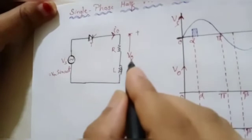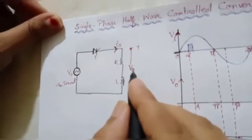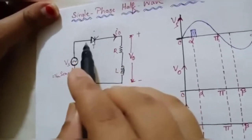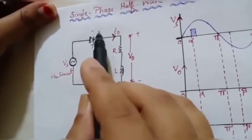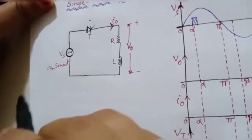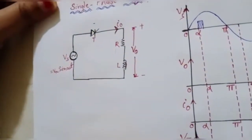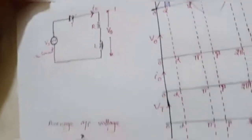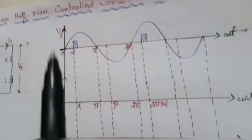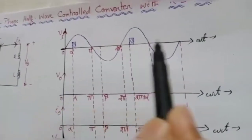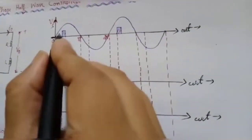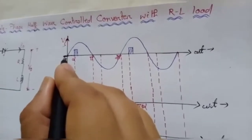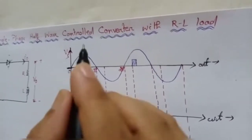Now we will draw the waveforms of V0 (output voltage), output current, and voltage across the thyristor device. The supply voltage VS is a sine wave, and I have drawn the sine wave here.